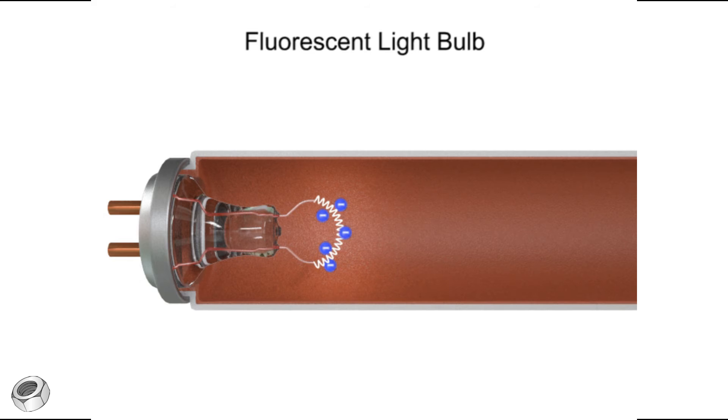An AC voltage pulse, supplied by a starter, pushes the electrons from one end of the tube to the other.